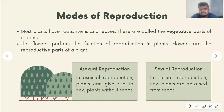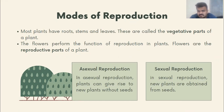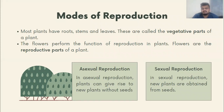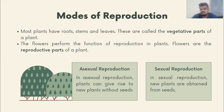Before moving ahead, let's define sexual and asexual reproduction. You might observe that some plants reproduce sexually and some asexually. In sexual reproduction, new plants are obtained from seeds. In asexual reproduction, plants can give rise to new plants without seeds. These definitions you have already studied in Reproduction in Plants in class 7.